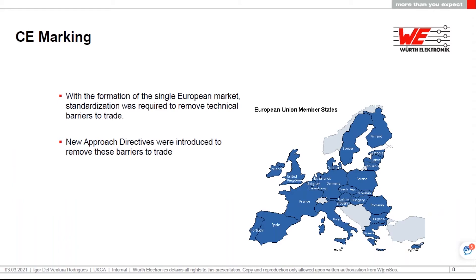Prior to Brexit, the UK was within the European Economic Area, so CE marking was applicable for any products we wished to export into Europe. CE marking is the passport for your product — it shows that your product meets the essential requirements for all applicable directives. For an electronic device that could include the EMC Directive, the Radio Equipment Directive, the RoHS Directive, the Low Voltage Directive, etc. Meeting those essential requirements allowed the product free movement around the European Economic Area.